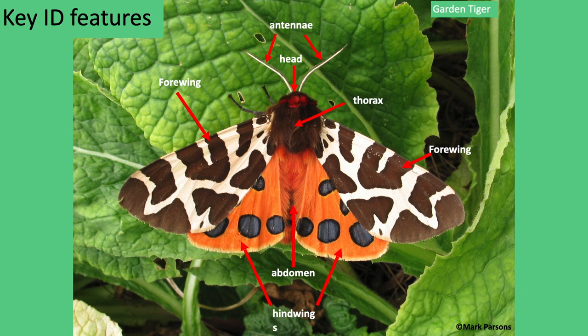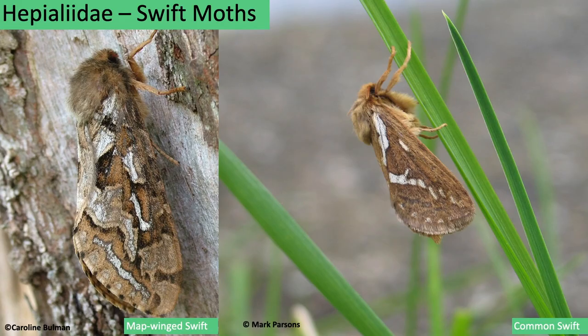Key identification features to look at are the wing shape at rest, abdomen shape, markings and antenna. It's useful to get to know the terms for the different body parts. Macro moths are split into 13 families and lots of different sub-families, and characteristics of these are helpful in the identification process. Eleven of these families are present in Yorkshire.